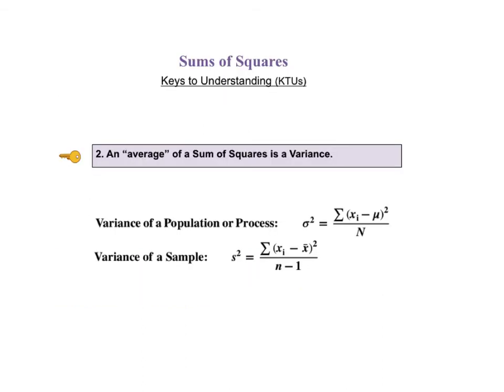As key to understanding number two says, the average of sum of squares is a variance. There will be a separate video on variance, but here is how we calculate the average of the squares in the sum of squares for population or process and for a sample. For a population or process, we divide the sum of squares by capital N, the number of items in the population or process. For a sample, we divide by the sample size minus one.